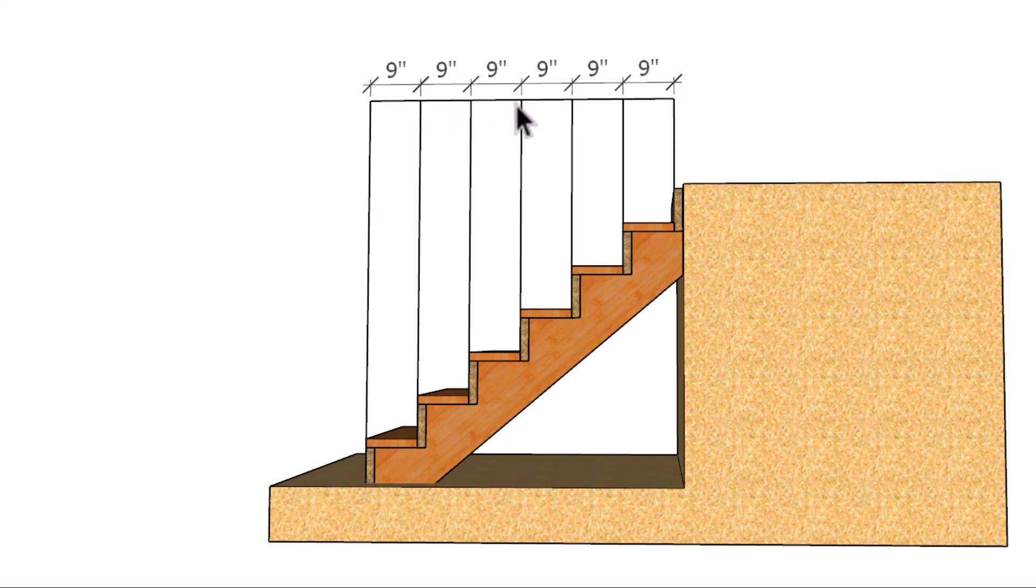So here we have six 9 inch steps. If we multiply six times nine we should end up with 54 inches. If I wanted to have six 10 inch treads the only way I'm going to be able to do that will be to extend the length of the stairway to 60 inches.